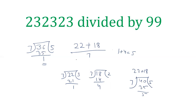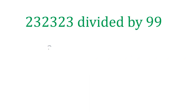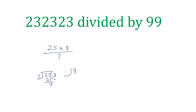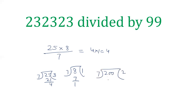In multiplication also we can apply this method. For example, if the numbers are 25 and 8 divided by 7: when you divide 25 by 7, seven threes are 21, so remainder is 4. And 8 divided by 7 gives remainder 1. Therefore the final remainder will be 4 into 1, which is 4.